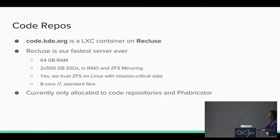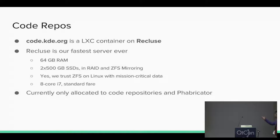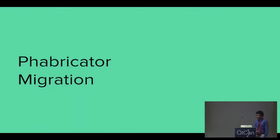Recluse has an 8-core i7 at 3 GHz and is currently underused — we only have code repositories on it and we're planning to move Fabricator to it, so capacity is not a problem. This brings us to our next topic: Fabricator migration.